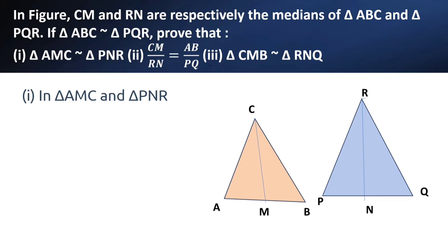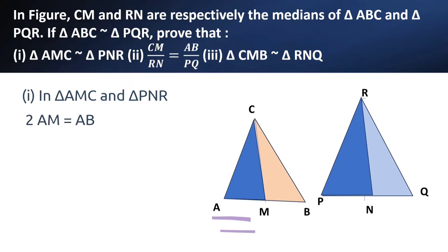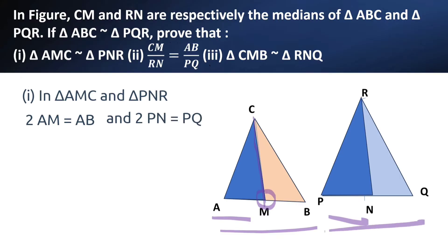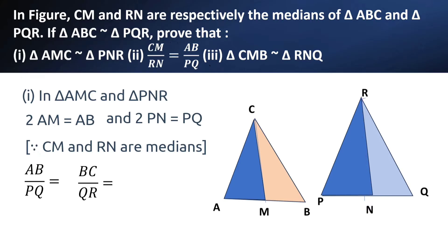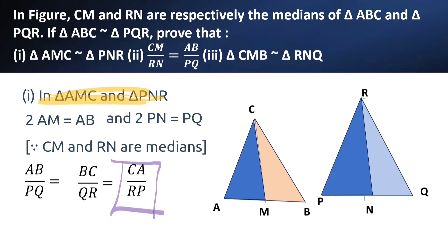In triangle AMC and triangle PNR, shaded in blue color: 2AM is equal to AB, because M is the midpoint of AB since CM is the median. Similarly, 2PN is equal to PQ, because RN is the median and N is the midpoint. We already know AB by PQ is equal to BC by QR is equal to CA by RP.